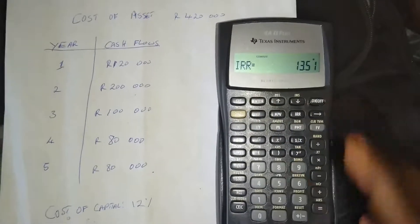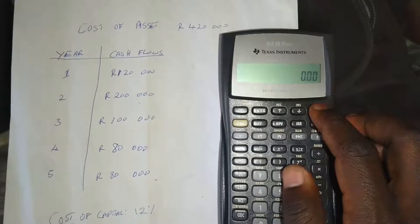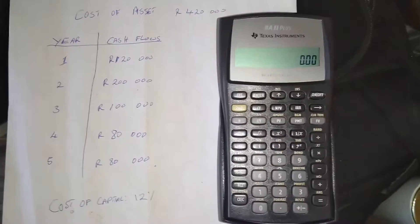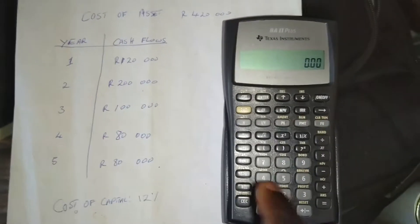So how do we do it with the BA2 plus? The first thing that we do with any financial calculator is to make sure that your memory is cleared. So let's do that.